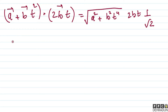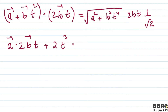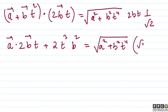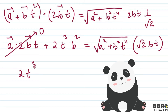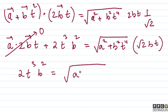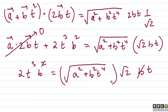तो हम लोग लिख सकते हैं: (a vector plus b vector t squared) dot (2b vector t) equals √(a² + b²t⁴) multiplied by 2bt multiplied by (1/√2)। इसे expand करें तो: a vector dot 2b vector into t plus 2t cubed times b vector dot b vector। यहाँ a vector dot b vector वाला term 0 हो जाएगा क्योंकि a और b दोनों mutually perpendicular हैं।